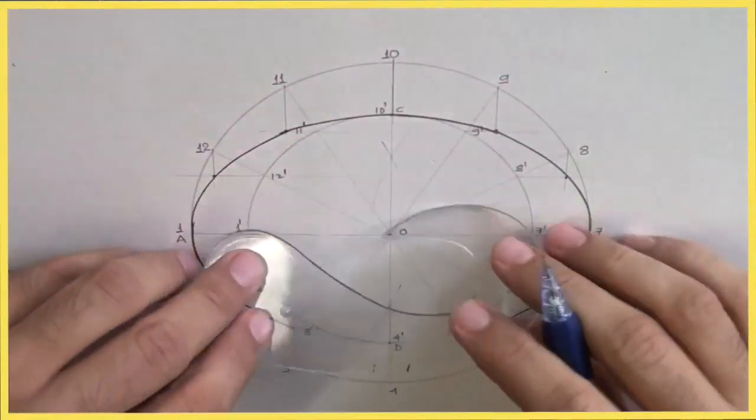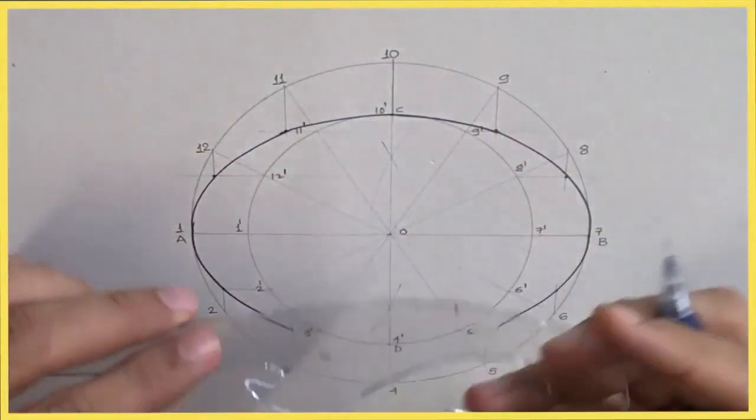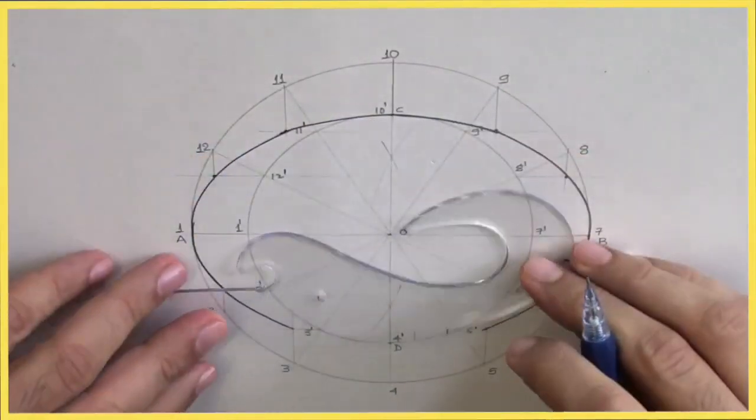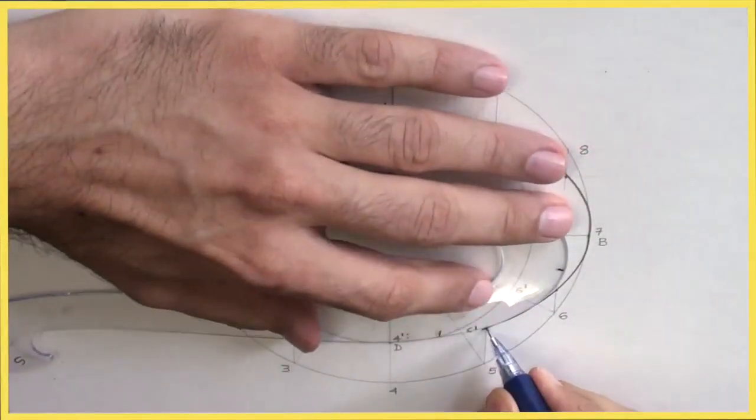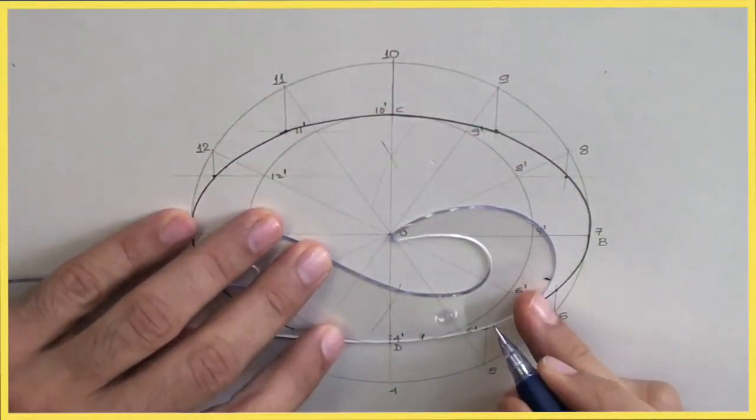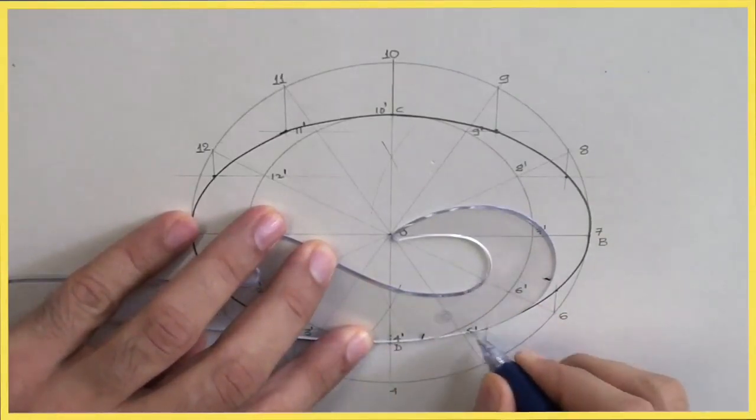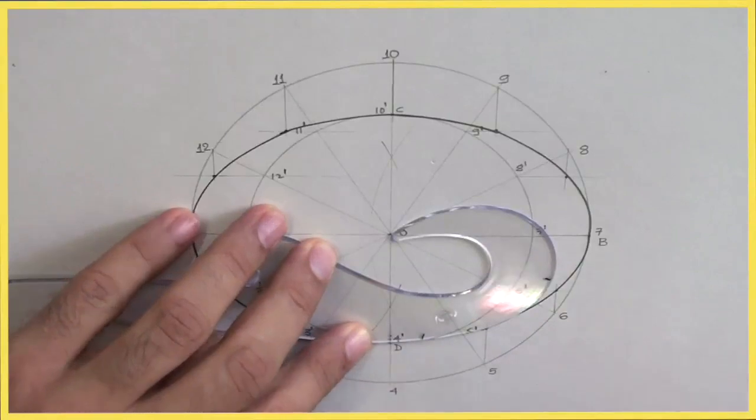Now, again, you flip. See this. First, then you flip it this way. Then again, you flip. Got it? So, you draw curve. Again, you flip.